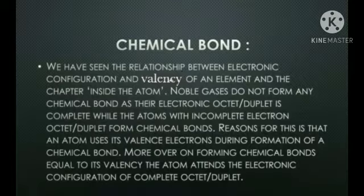Moreover, on forming a chemical bond equal to its valency, the atom attains the electronic configuration of a complete octet or duplet. Chemical bonds are of two types: ionic bond and covalent bond. Let us see them one by one.